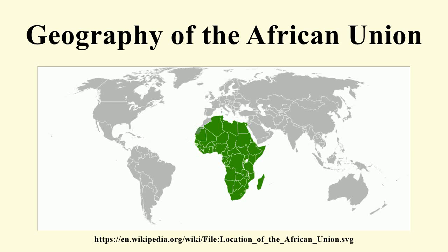The African Union covers almost the entirety of continental Africa and several offshore islands. Consequently, it is wildly diverse, including the world's largest hot deserts, huge jungles and savannas, and the world's longest river.